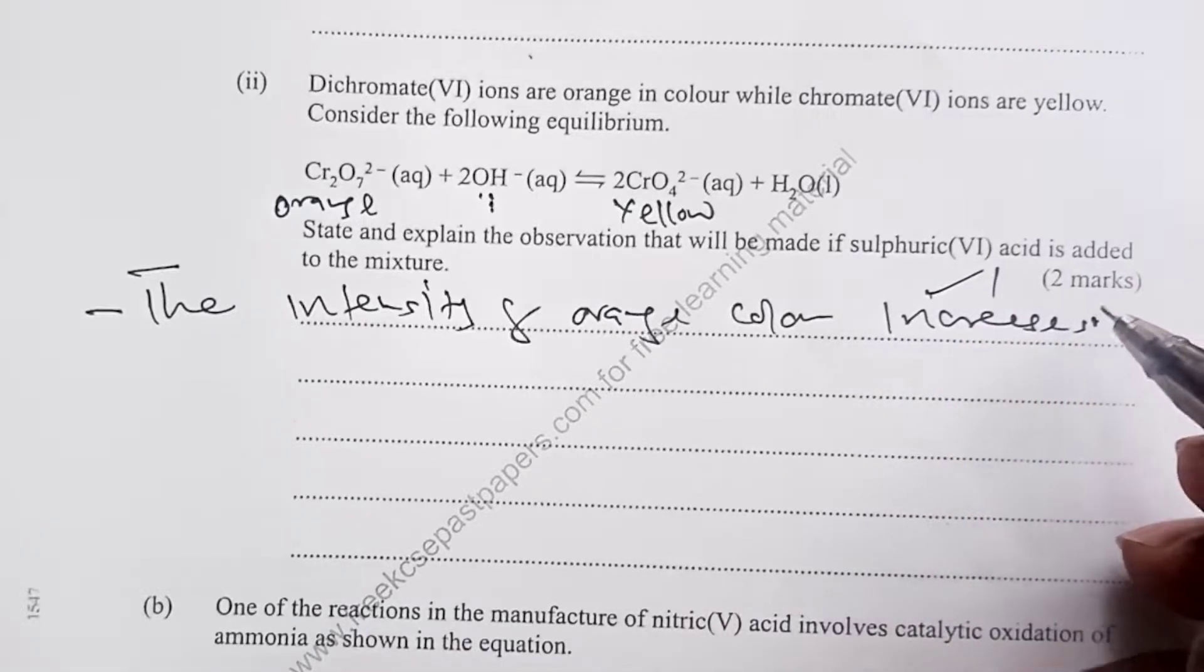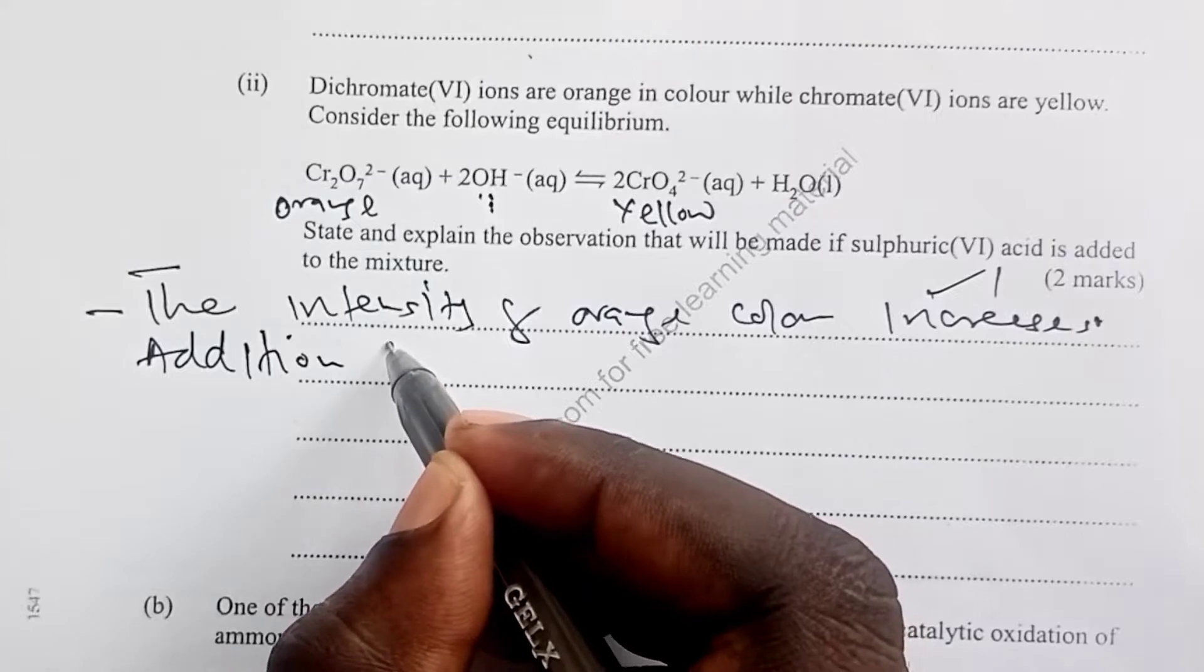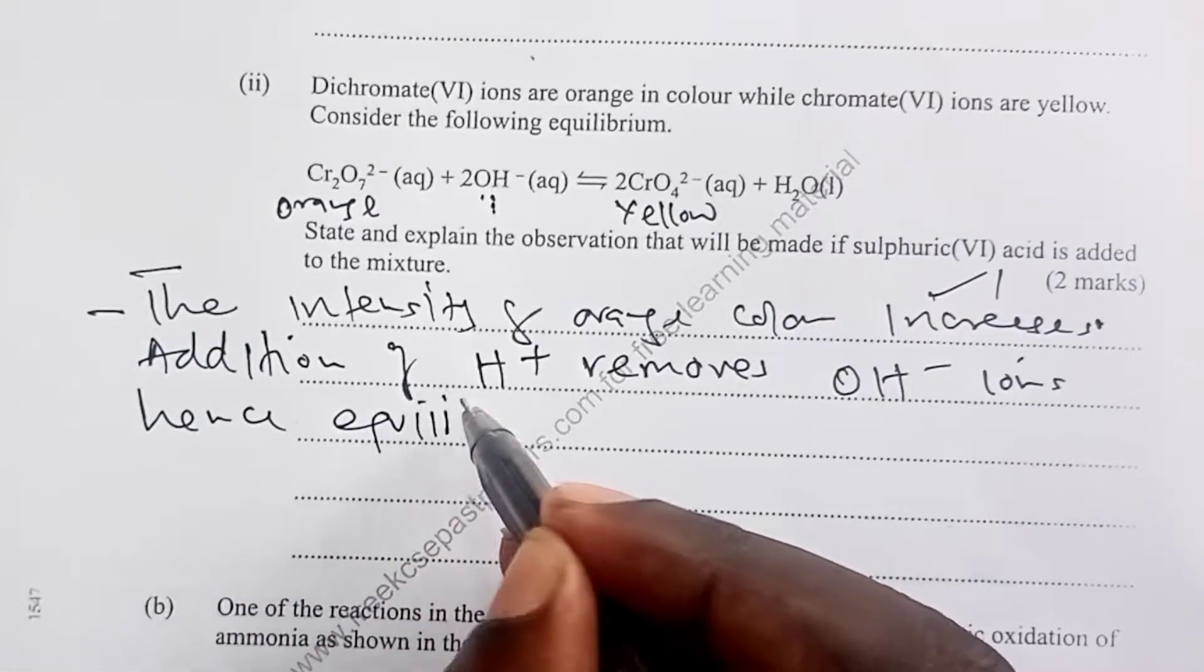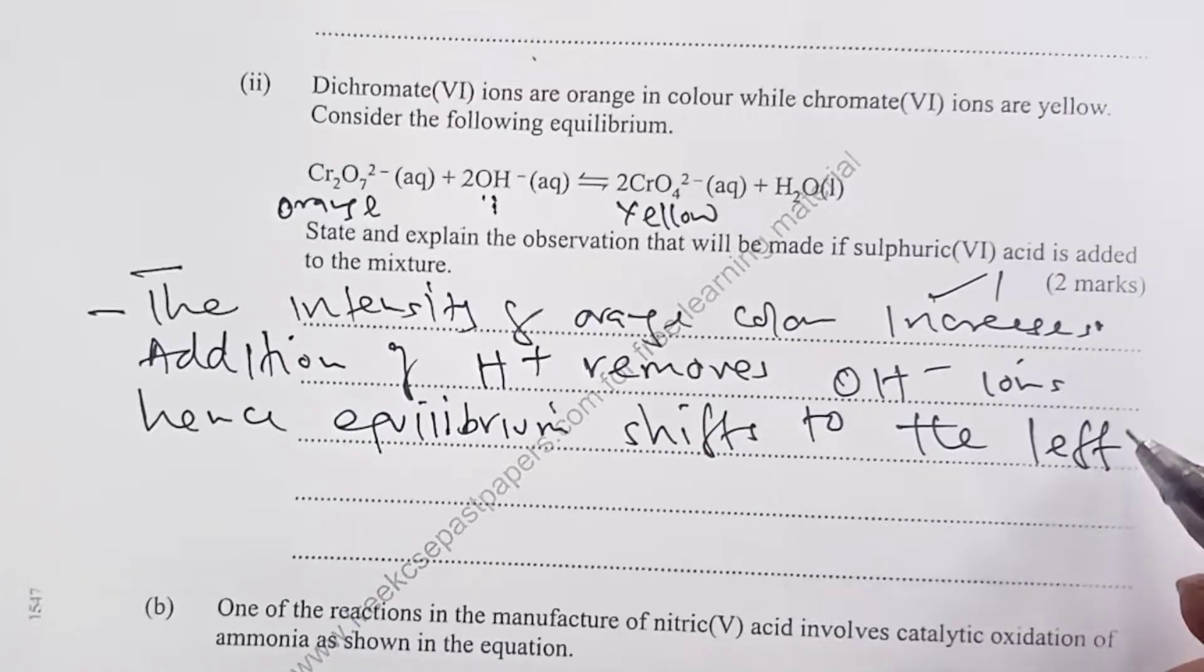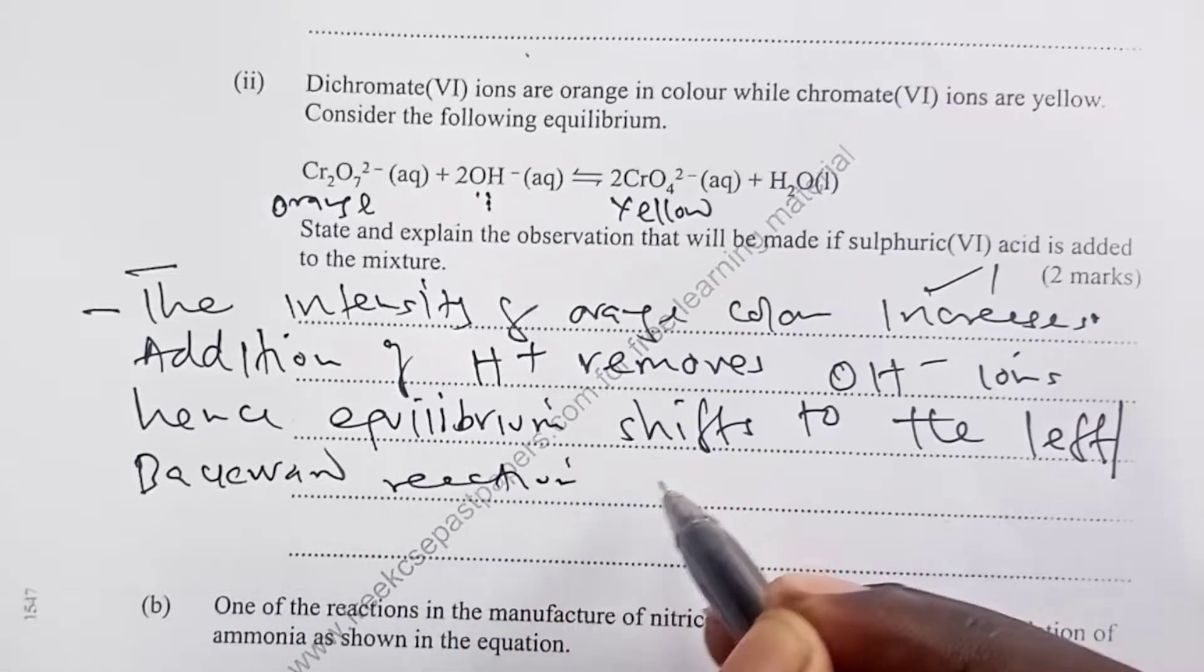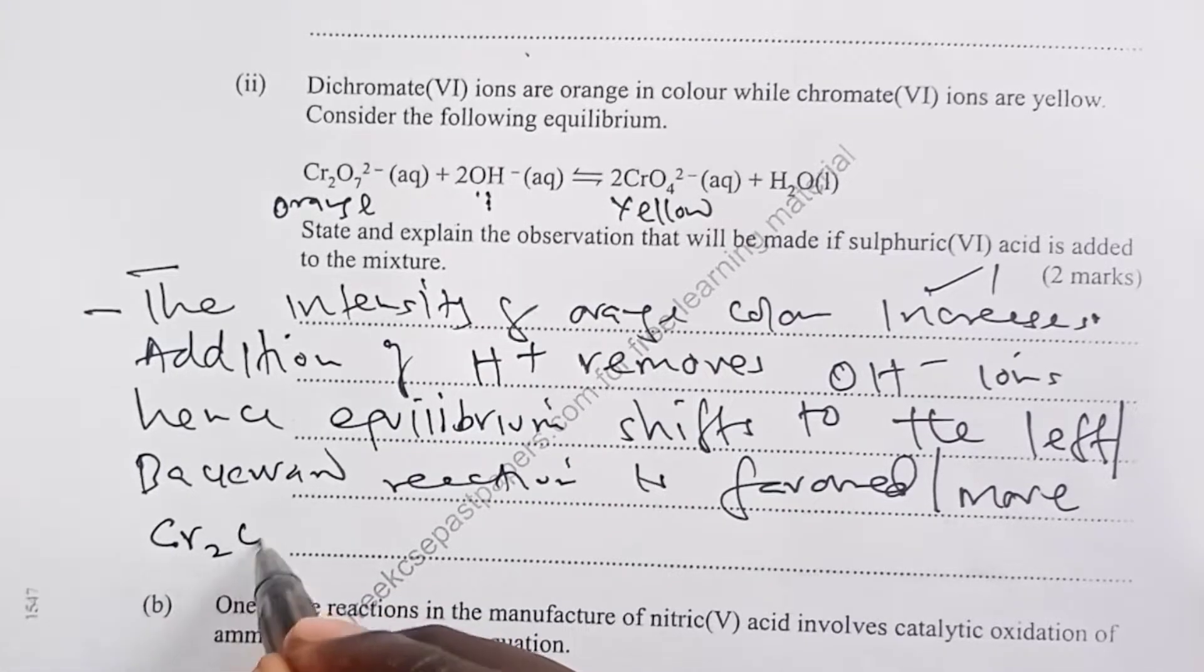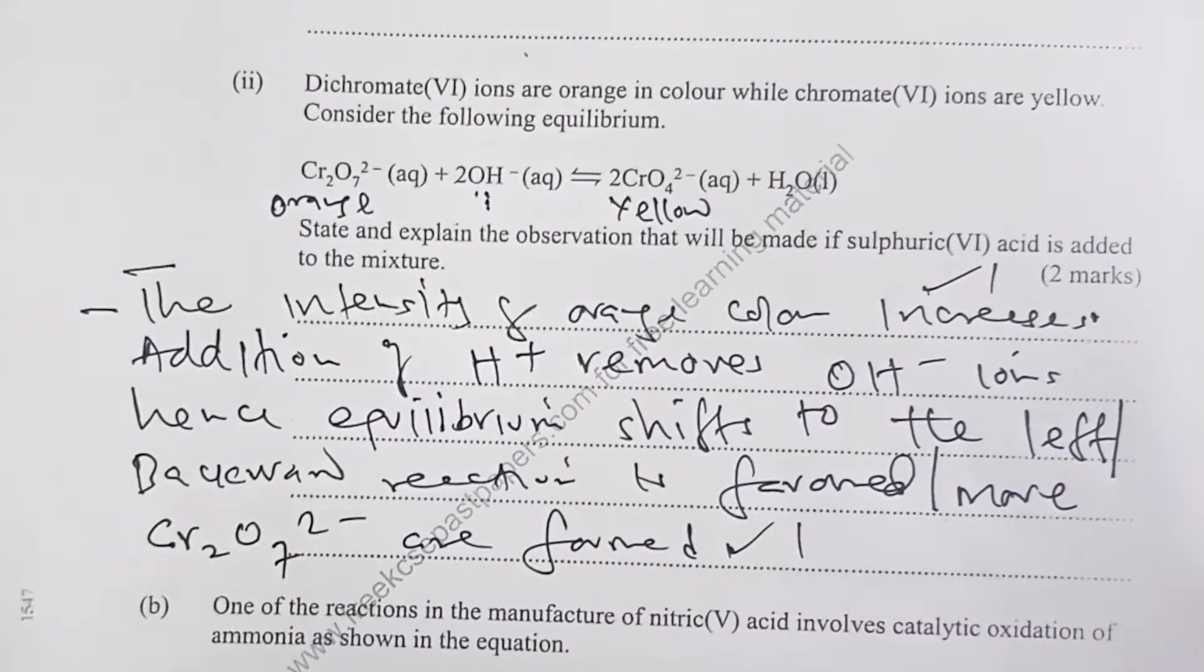The expected response here would be the intensity of orange color increases, as we have said in our discussion. So this was one mark. You go ahead and explain that addition of hydrogen ions from sulfuric(VI) acid removes hydroxyl ions. Hence, equilibrium shifts to the left. This has an alternative that backward reaction is favored, or a student would also write that more dichromate(VI) ions are formed. This for the next mark, totaling to 2.